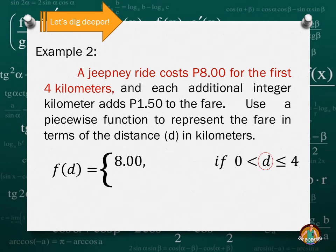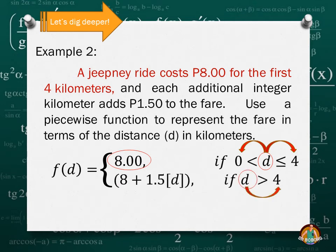So if you reach 4 or less than 4, you will still pay 8 pesos. So 8 pesos is what you'll pay. But the second condition: each additional integer, you will add 1 and 50 cents. So if you exceed 4 kilometers, take note, kilometers, it's an integer. So if you reach 5, if you reach 6, you will add 1 and 50 cents. So if your D is greater than 4, you will have 8 plus 1.5 times D. What is D here? Our D here is floor function applied to D.